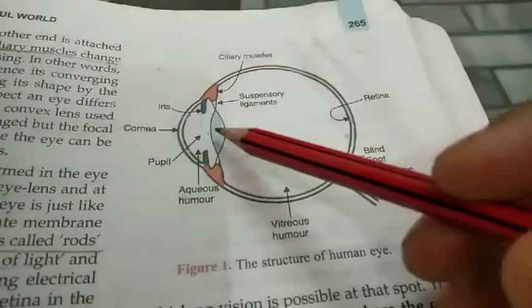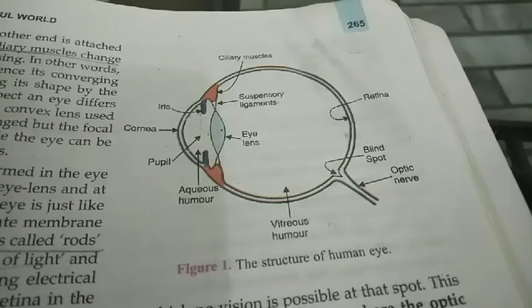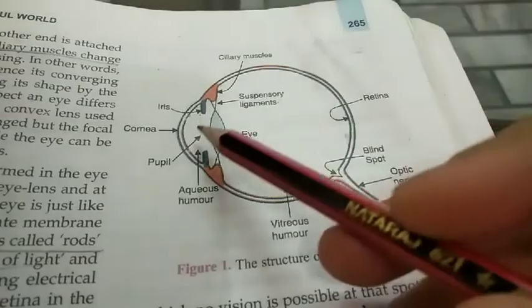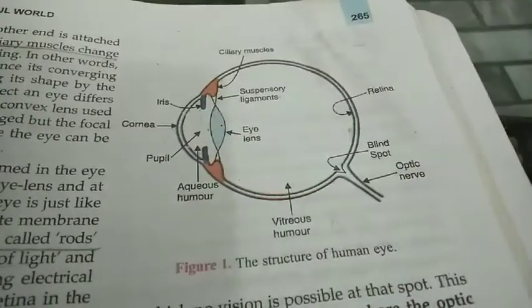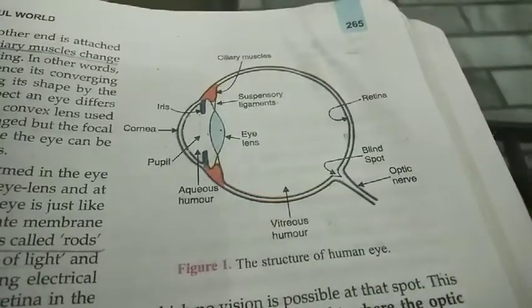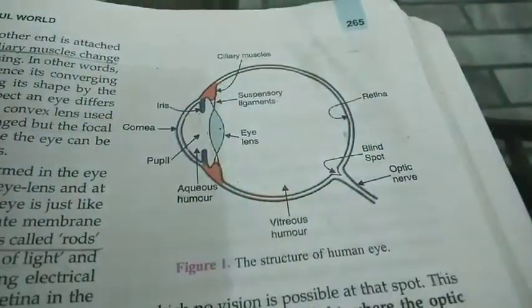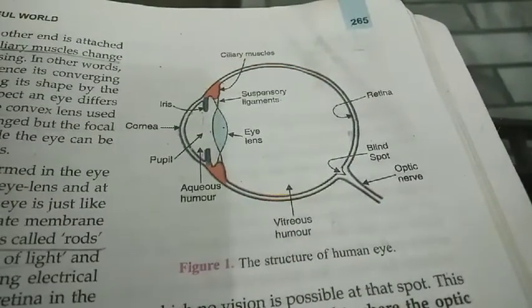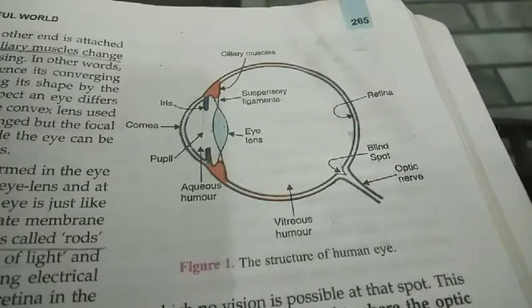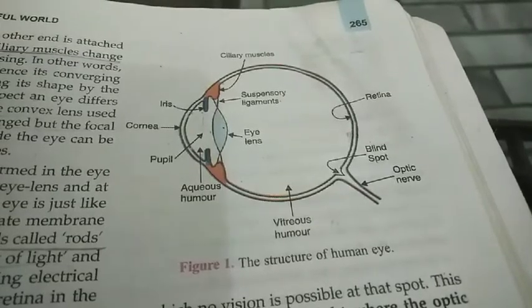Next comes our lens. The eye lens is a convex lens that is made of transparent and flexible tissues, and it is present just behind the pupil. This lens is held in position with the help of the suspensory ligaments — one end of the suspensory ligaments is attached to the eye lens and the other end is attached to the ciliary muscles. The ciliary muscles control the focal length of the eye lens. When these muscles contract, the lens becomes thick and the focal length decreases. When the ciliary muscles are relaxed, the lens becomes thin and the focal length increases.